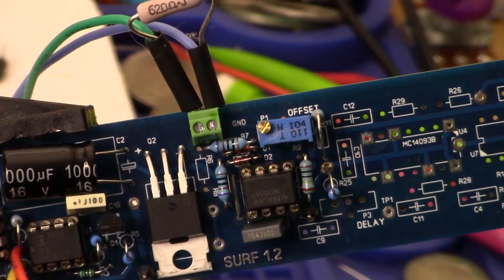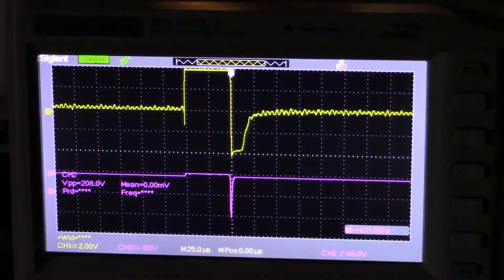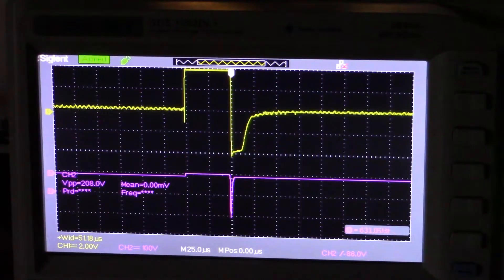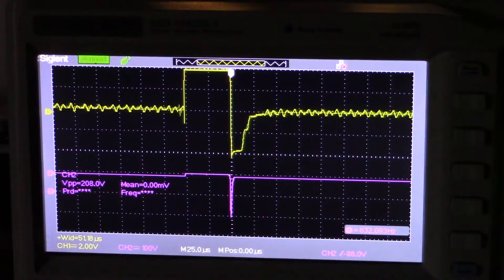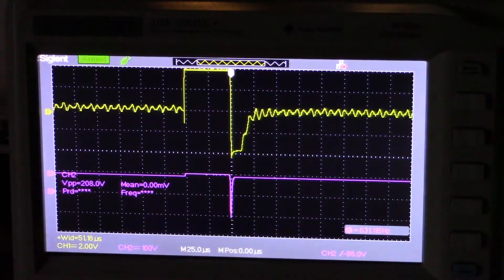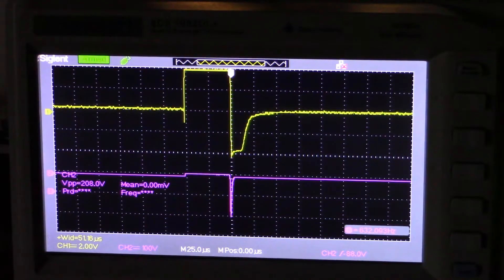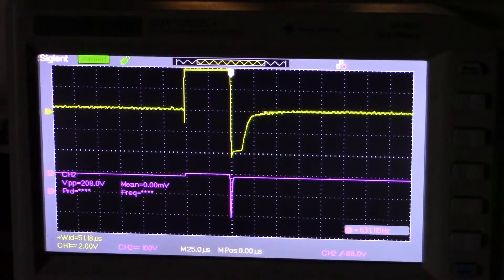Okay guys, channel one is the output of the preamp. You see I've got quite a bit of ripple going there. I have a tremendous amount of EMI in my workshop and the coil that I'm using presently does not have a shield on it. Channel two is the coil flyback. It's in the vicinity of about 200 volts.